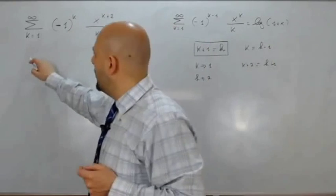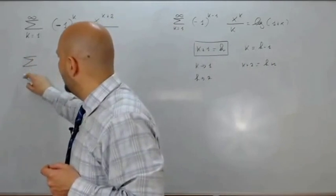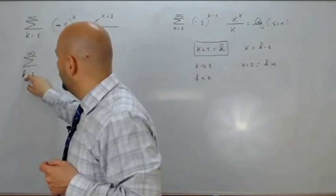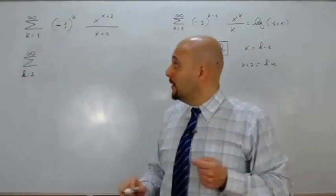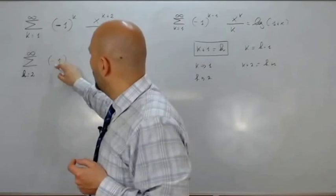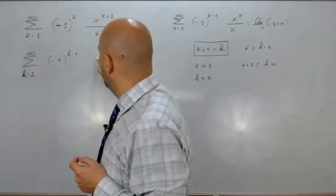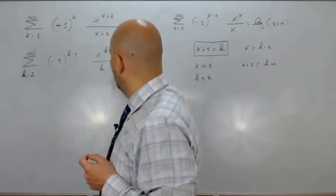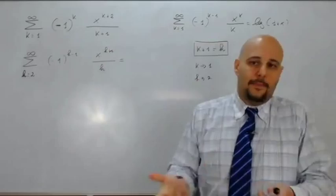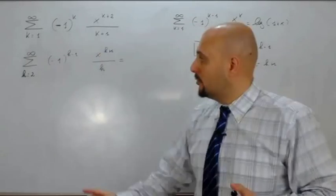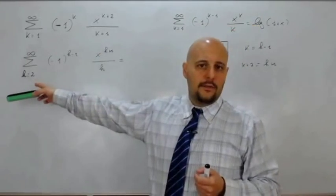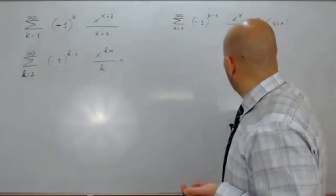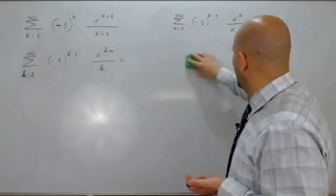Siamo pronti a scrivere questa in maniera equivalente: sommatoria per h che parte da 2 fino all'infinito, di meno 1 alla h meno 1, per x elevato alla h più 1, diviso h. È praticamente l'espressione che volevamo, solamente che la partenza non avviene da 1 ma da 2 — non cambia niente. Ragionare in h o in k non cambia assolutamente nulla, come accade nei limiti.